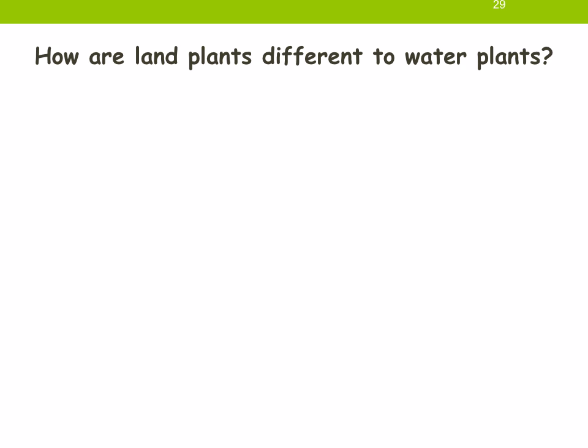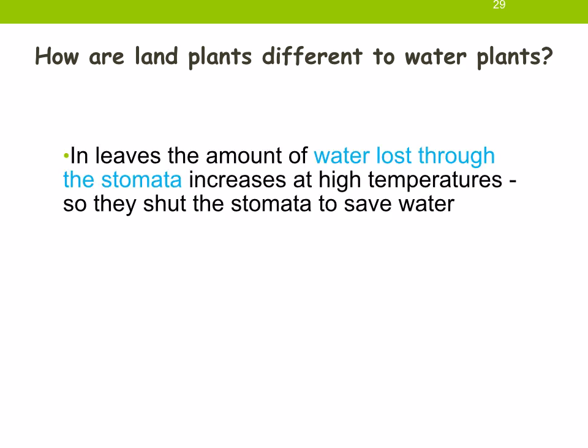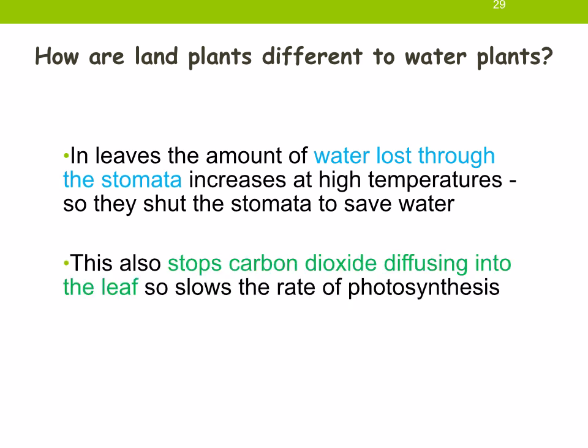Land plants are slightly different from water plants. In the leaves, the amount of water lost through the stomata increases in land plants at very high temperatures, so they shut the stomata to save water. This also stops carbon dioxide diffusing into the leaf, which will slow the rate of photosynthesis.